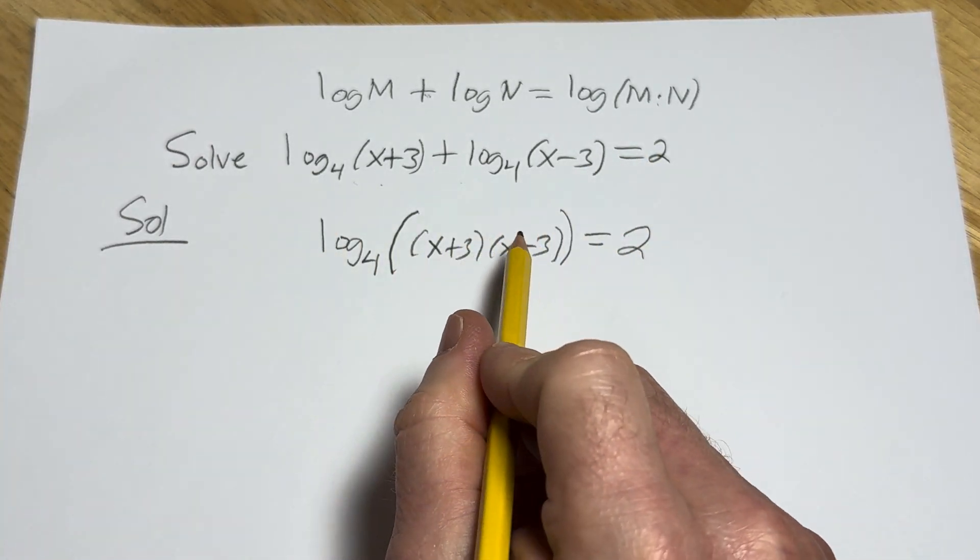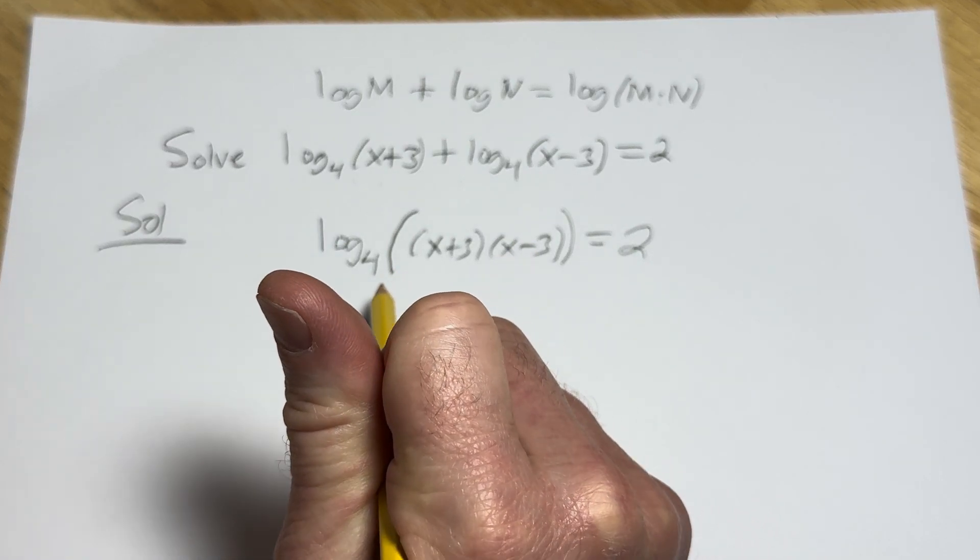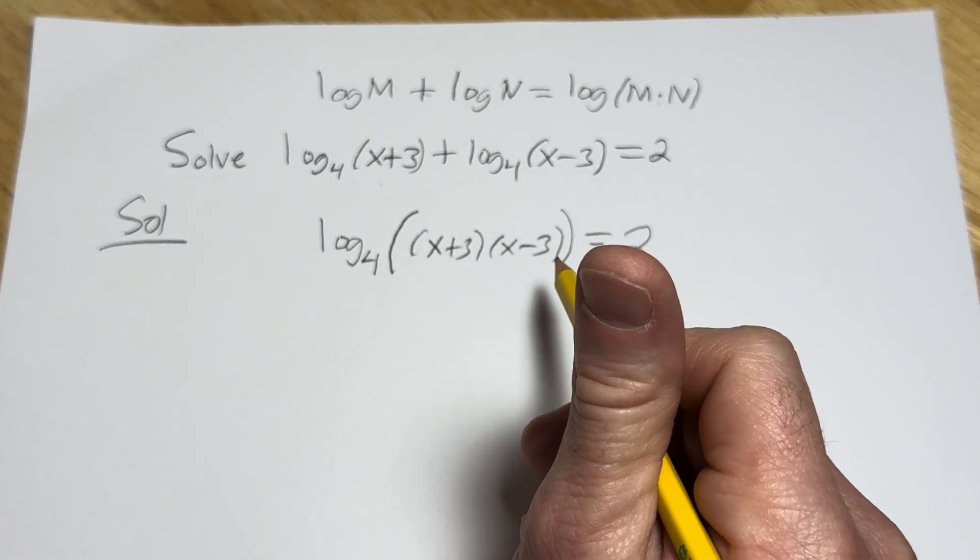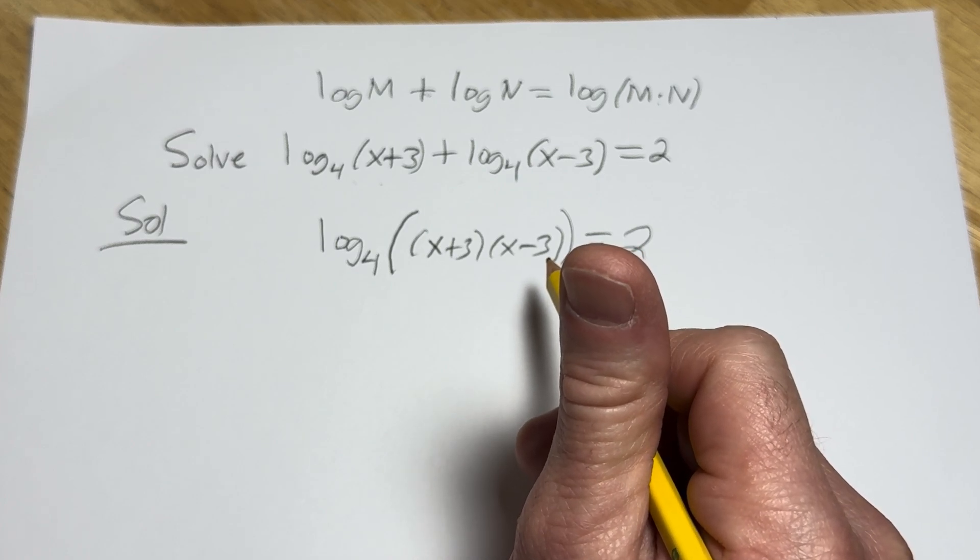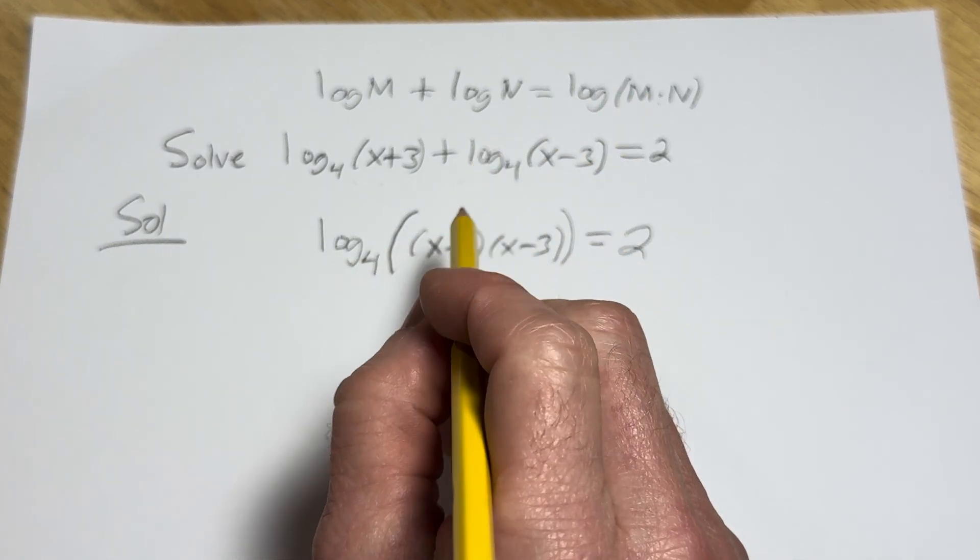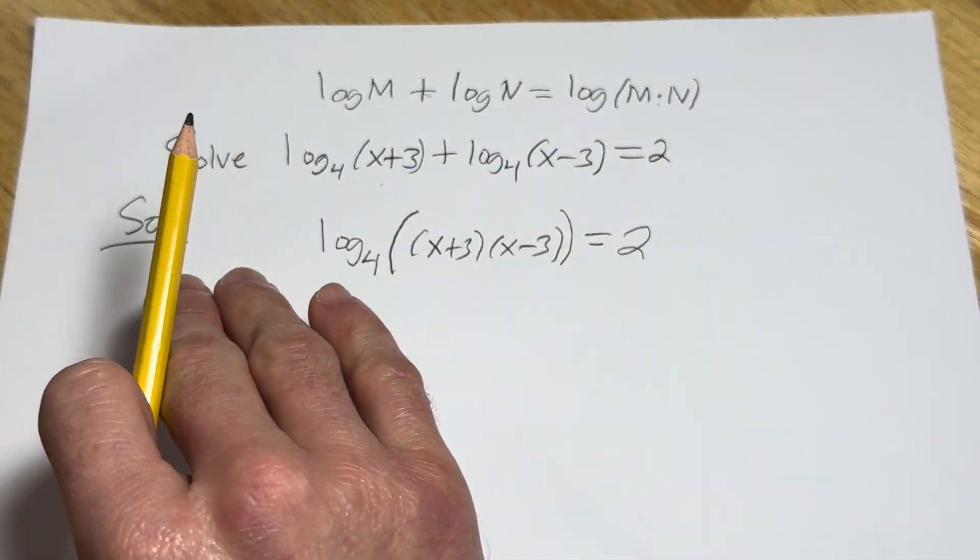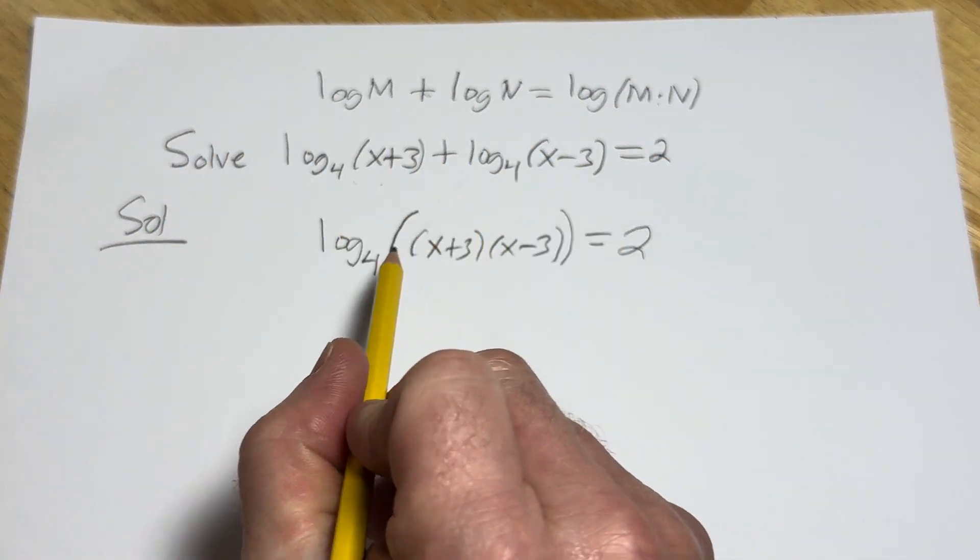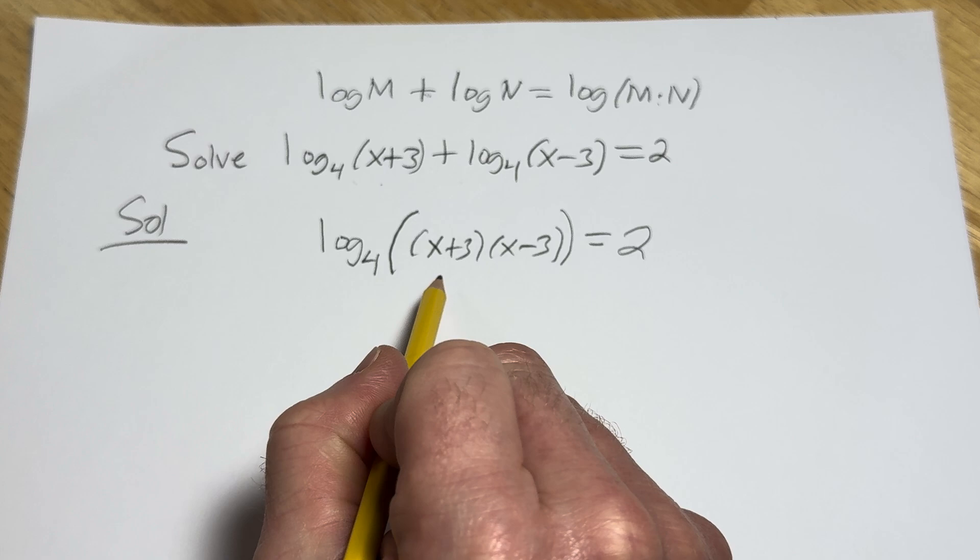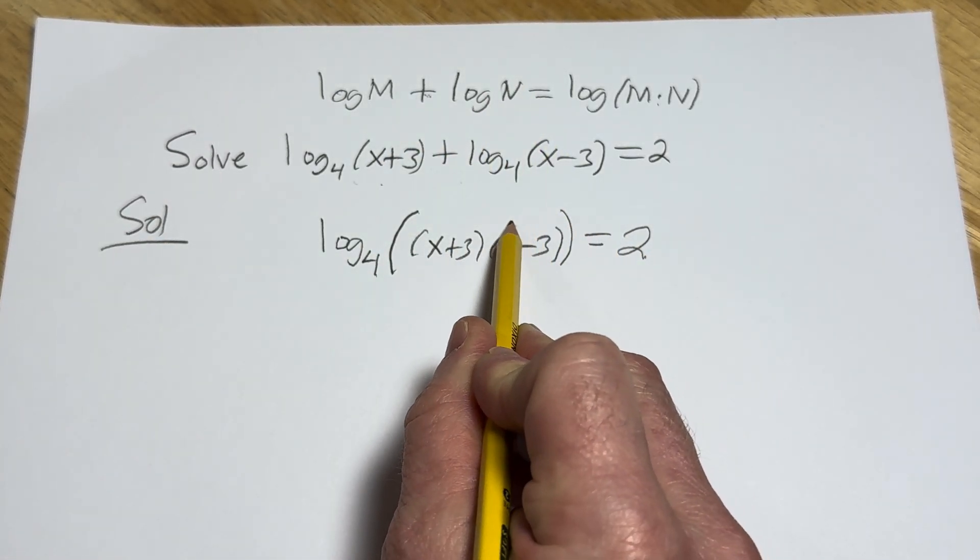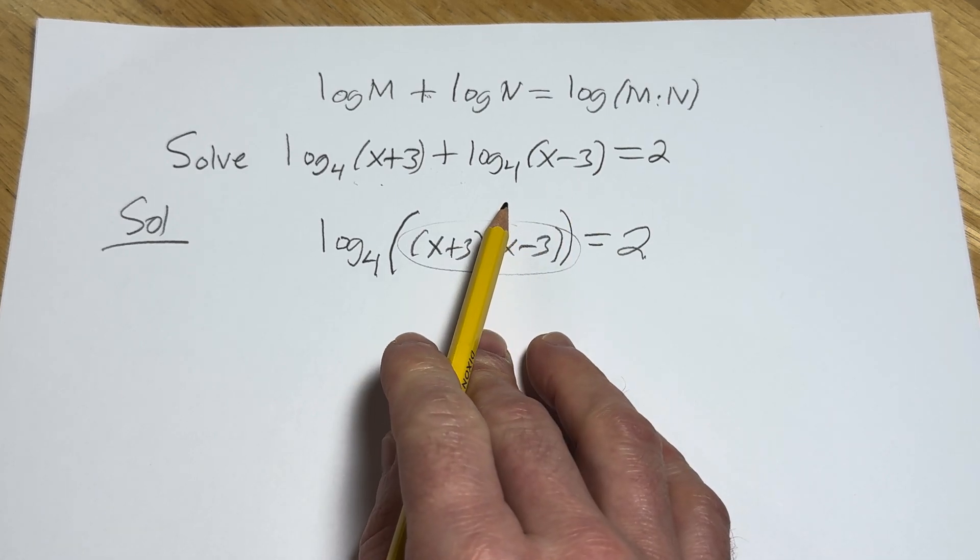And this has been written in what's called logarithmic form. So now we want to write this in exponential form. And the reason we want to do that is because it'll get rid of the log, right? We're trying to find x, but it's inside this log, and we're never going to find it unless we get rid of the log. So you can write it in exponential form two ways.